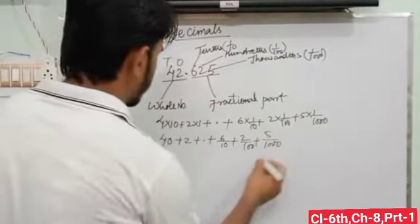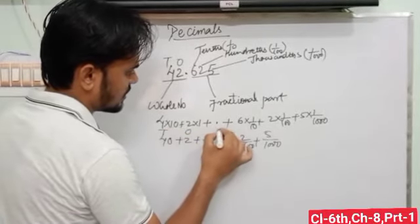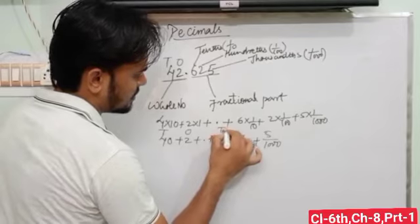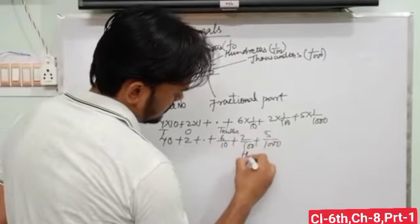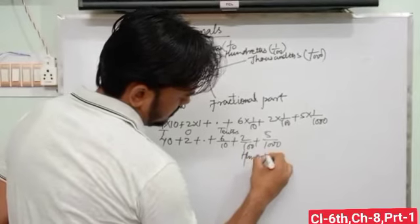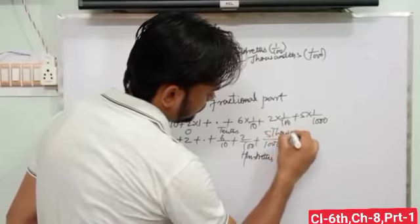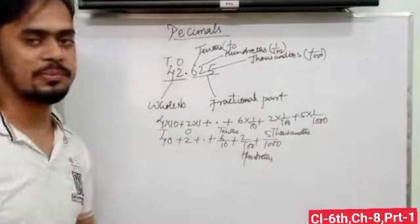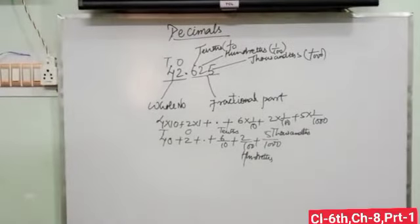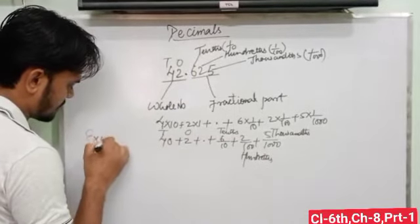So these are the places: this one here is place ones, tens, and tenths, and this one is hundredths, and this one is called the thousandths place. This is called the expanded form of decimal numbers.